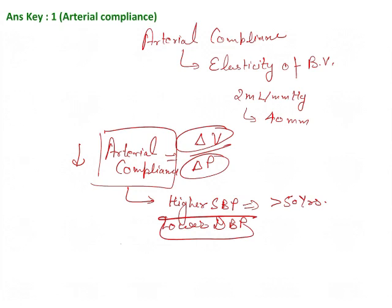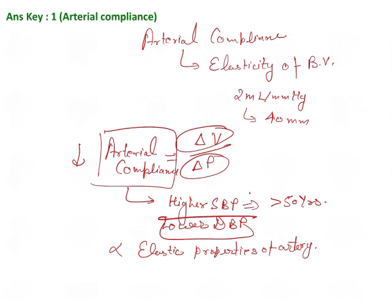Arterial compliance mostly depends on the intrinsic elastic properties of the arteries. It is also the determinant of the propagation speed of the pulse pressure wave — it determines how the pulse pressure wave propagates. Whenever there is a decrease in arterial compliance, it is responsible for both an increase in the incident pressure wave and a higher effect of the pressure wave on the different arteries. So, wide pulse pressure — that is, higher systolic BP and lower diastolic blood pressure — is a feature of decreased arterial compliance.